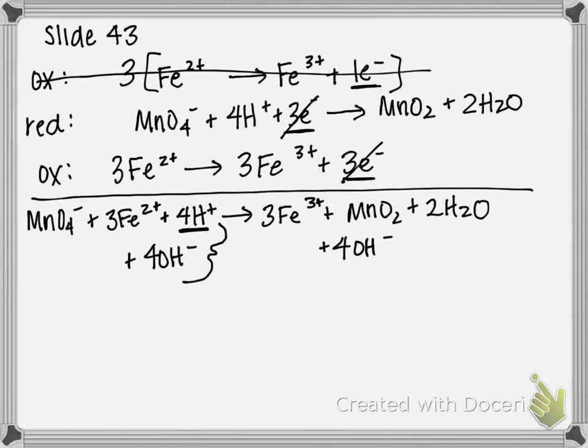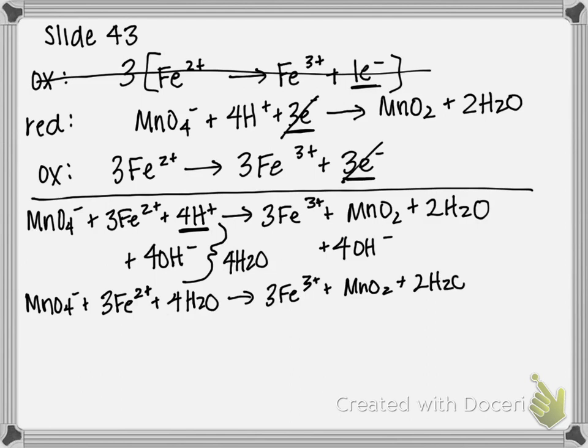Now, the two of these, when they come together, H plus OH gives you H₂O. So, since I have four of each, that means I have 4 H₂O on the reactant side. So we can rewrite to say MnO₄⁻ plus 3 Fe²⁺ plus 4 H₂O gives you 3 Fe³⁺ plus MnO₂ plus 2 H₂O plus 4 OH⁻.